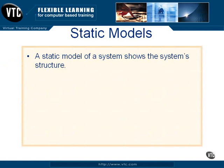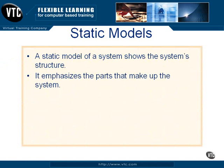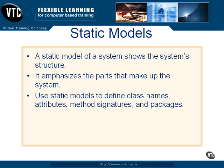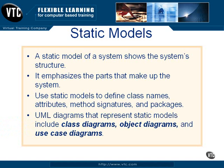Static models show the system's structure — the overall structure of the system, or some part of it. A static model emphasizes the parts that make up the system. Use static models to define class names, attributes, method signatures, and packages. UML diagrams that represent static models include class diagrams, which you'll see a lot of, object diagrams, and also use case diagrams.